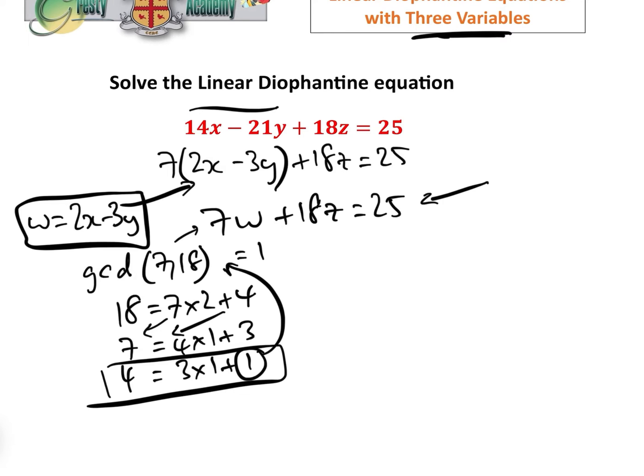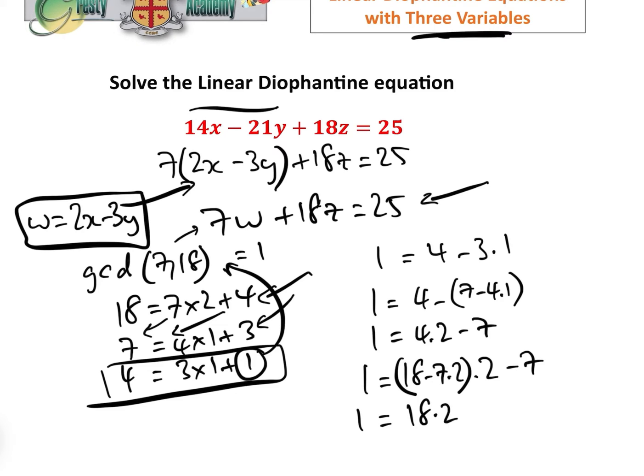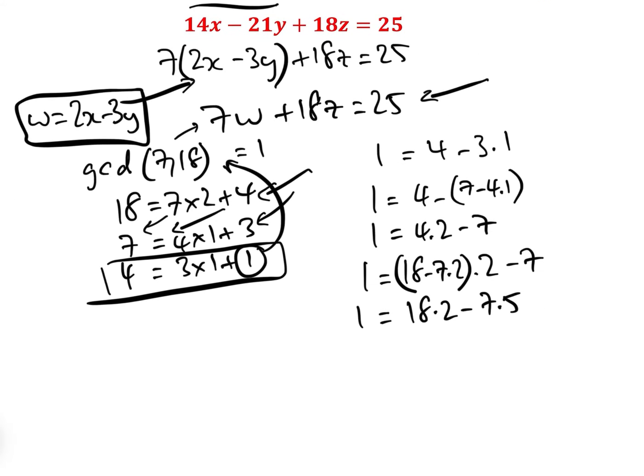Once we have this equation, we can move it around to be 1 equals 4 minus 3 times 1. Then we can replace the 3 here. So that would be 1 equals 4 minus (7 minus 4 times 1) times 1, i.e. 1 equals 4 times 2 minus 7.